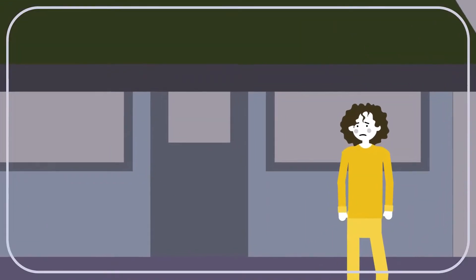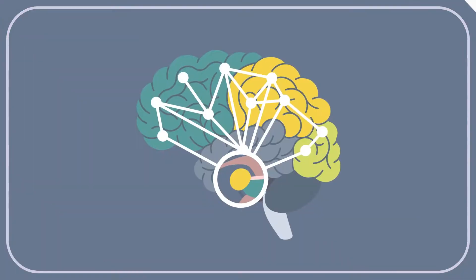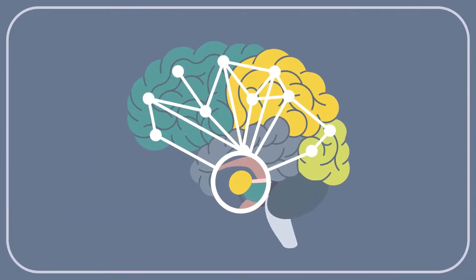Now think back to when you felt afraid in that foreign city. It seems like your brain did two things. It activated the neural circuitry designed to respond to threats.